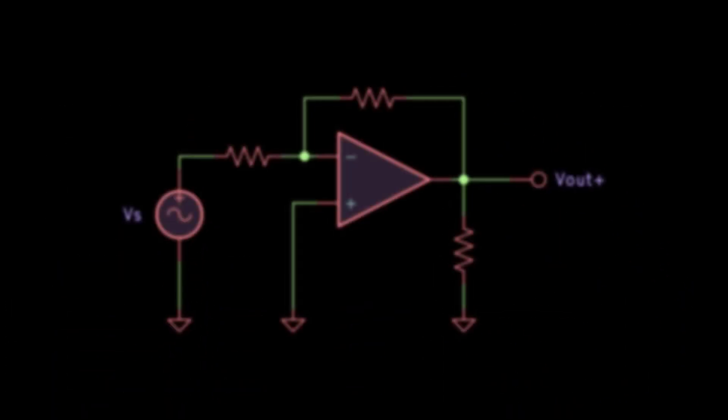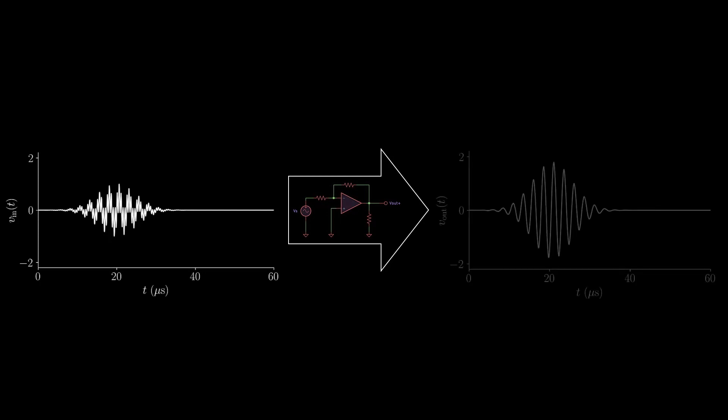Let's return to our op amp example. An input signal, V in, is applied to the circuit. The op amp amplifies the signal, resulting in V out.